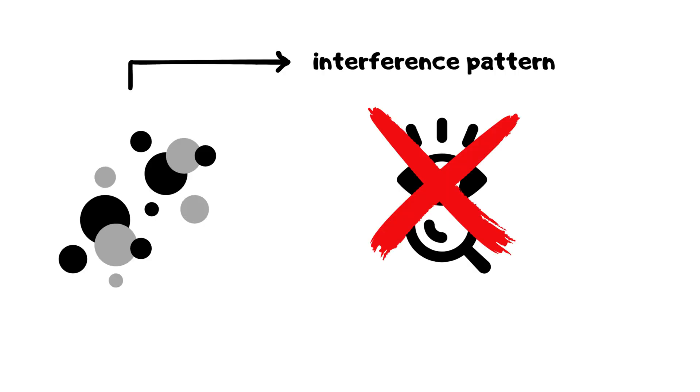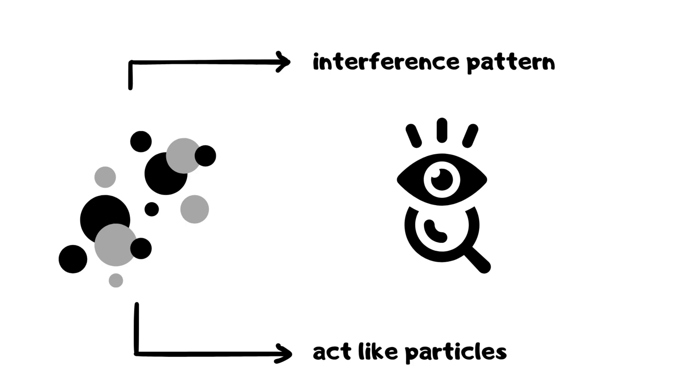Double-slit experiment paradox. Particles create an interference pattern when not observed but act like particles when observed, challenging our understanding of observation and reality in quantum mechanics.